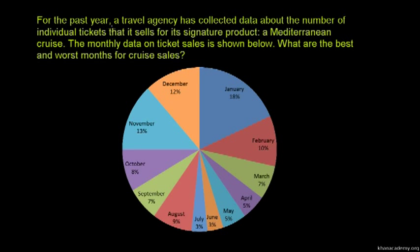If you have a travel atrium, you can use the data for the signature product that you need to buy in the Mediterranean cruise. If you want to use the sales of the cruise, you can use it as well.